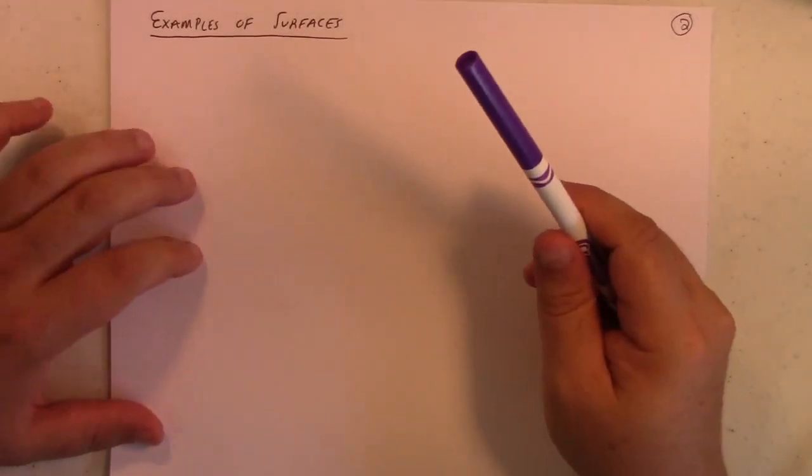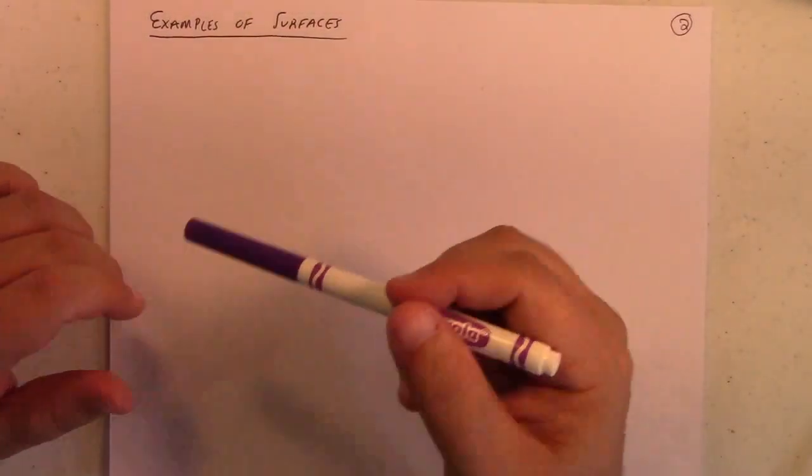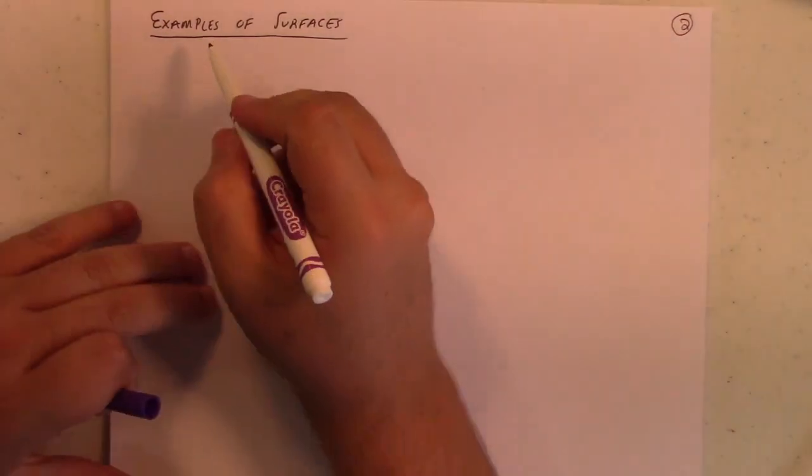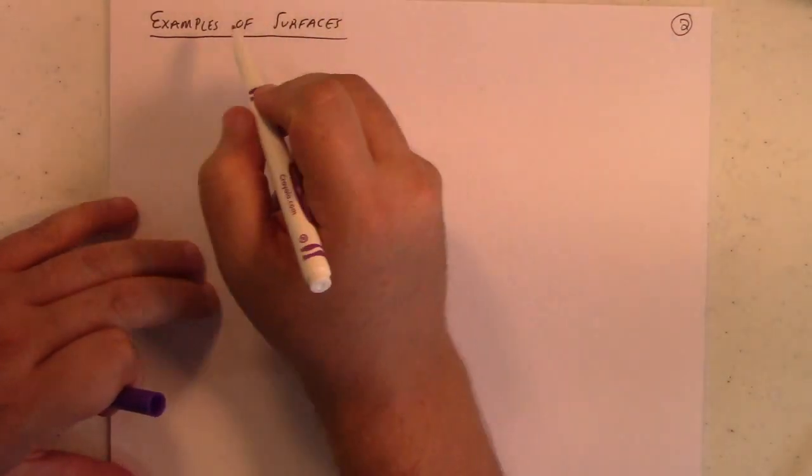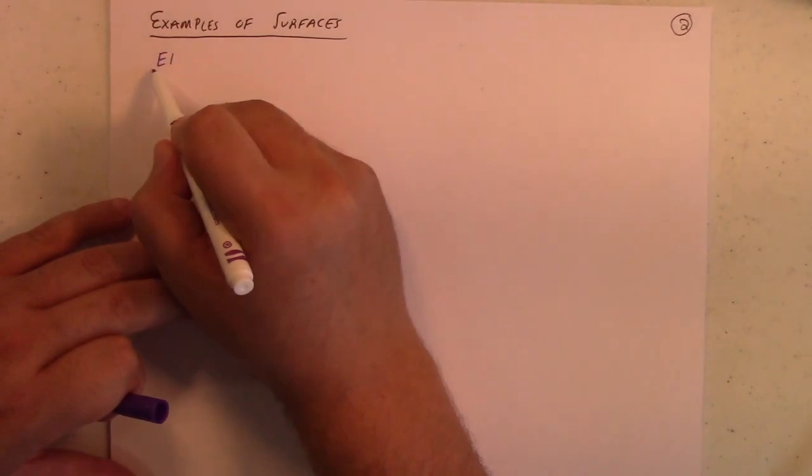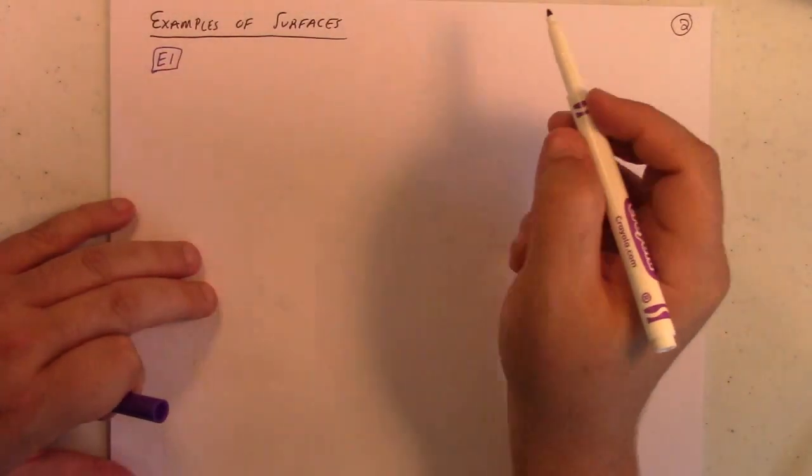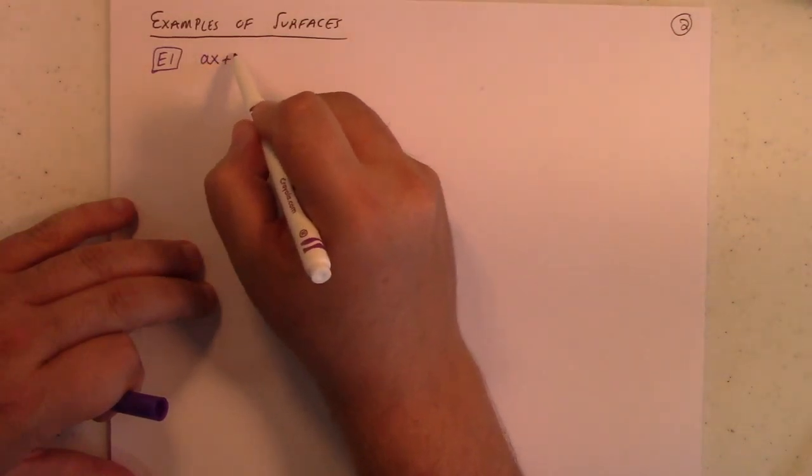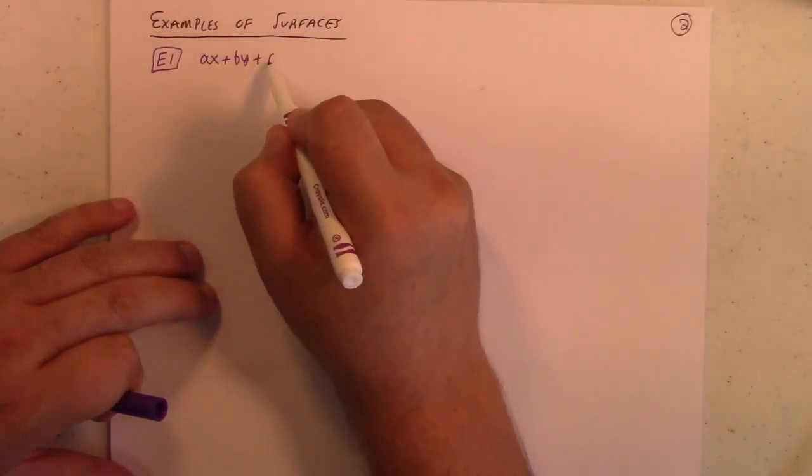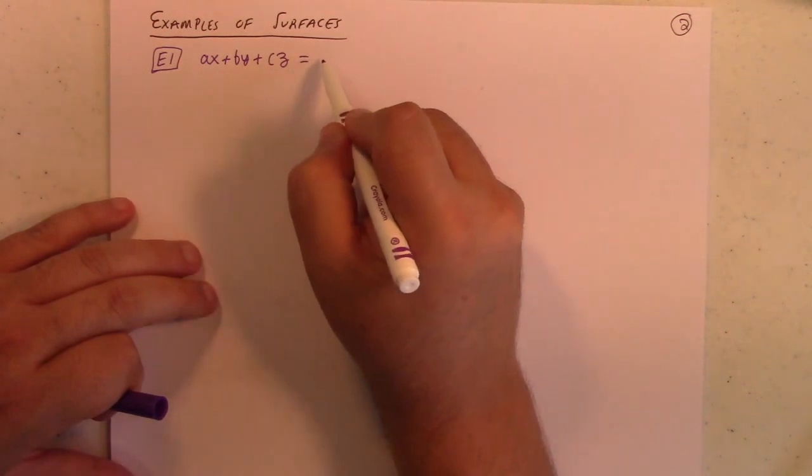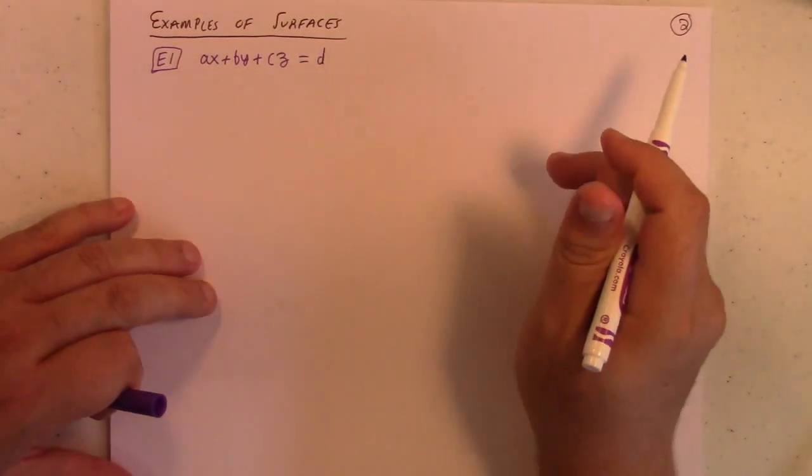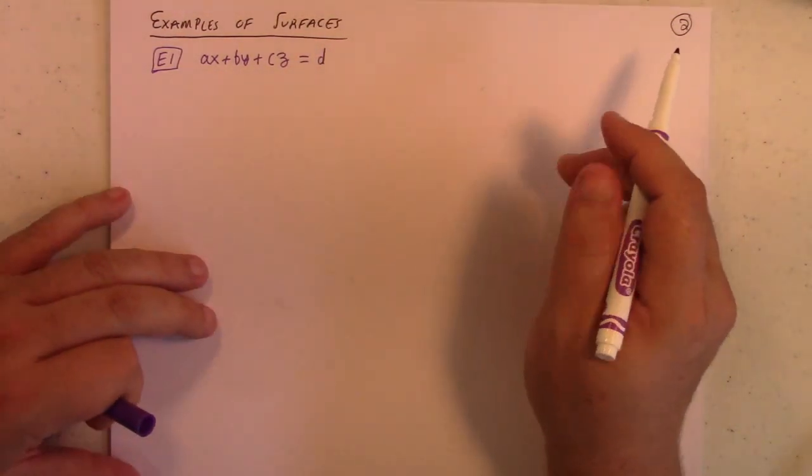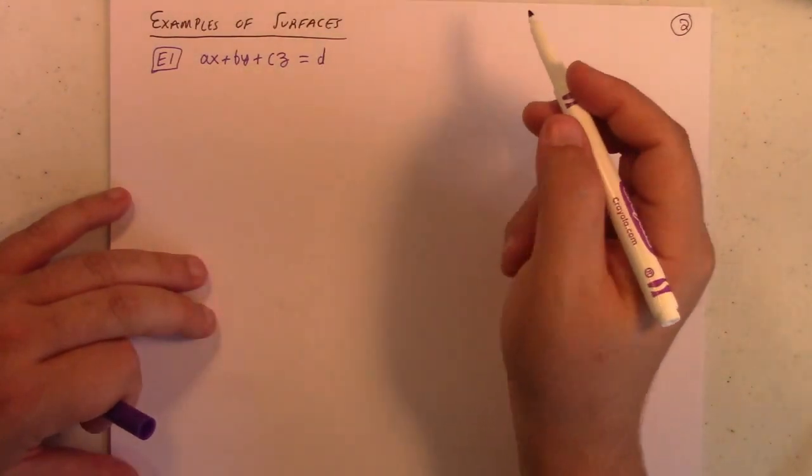Continuing lecture 12, we've defined a surface. Now I want to give you some examples of surfaces. The simplest example I can think of a surface is probably just the example of a plane. Well, that gives me a surface.